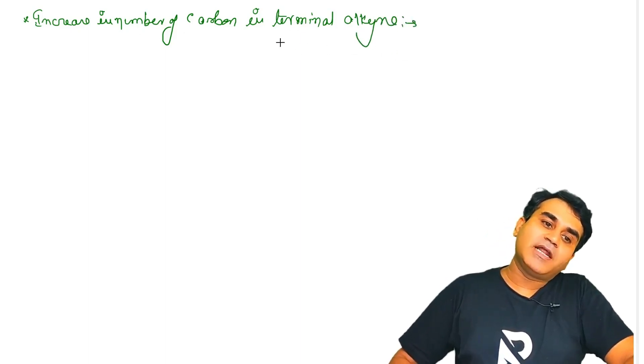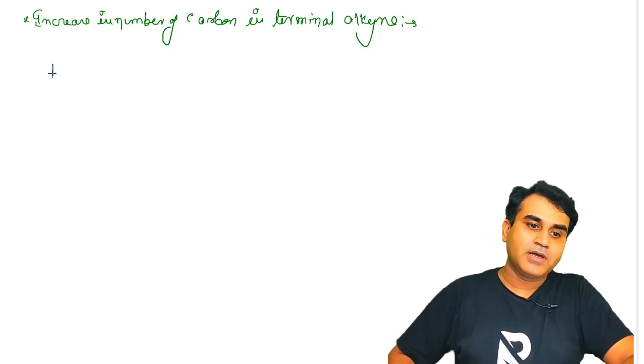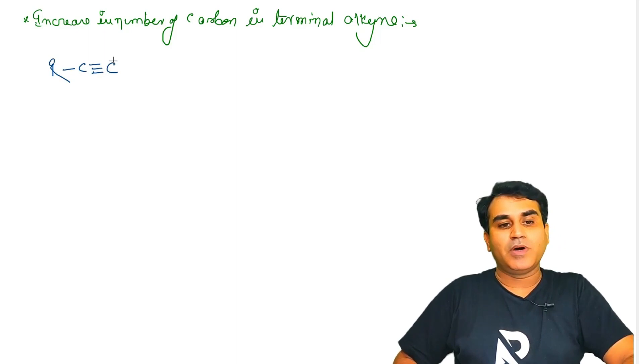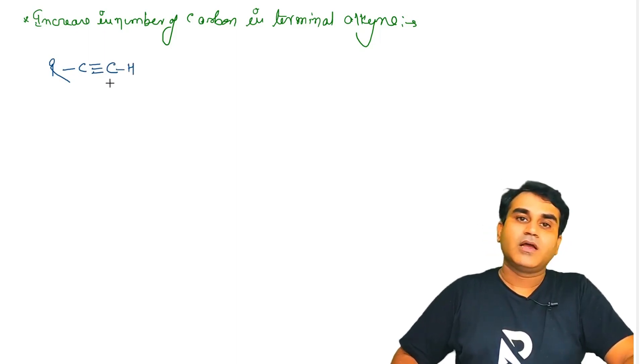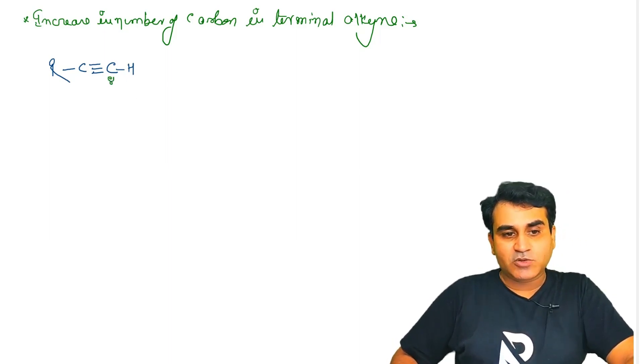Increase in number of carbon in terminal alkyne. We have a terminal alkyne at the end of the carbon chain - there is a triple bond. Complete carbon chain and last two carbons have a triple bond.